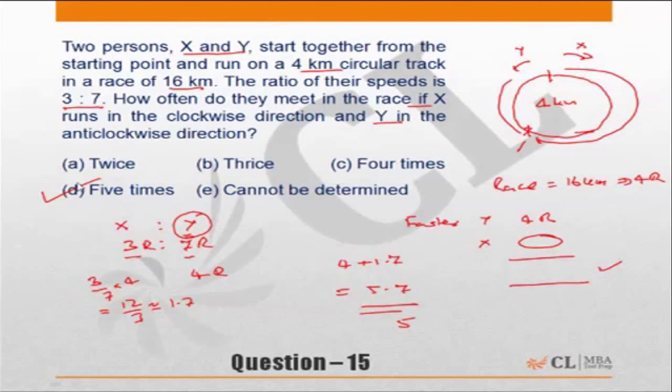In this question, they have cumulatively done 5.7, that means they would have met five times. Correct answer, as I said, is Choice D.